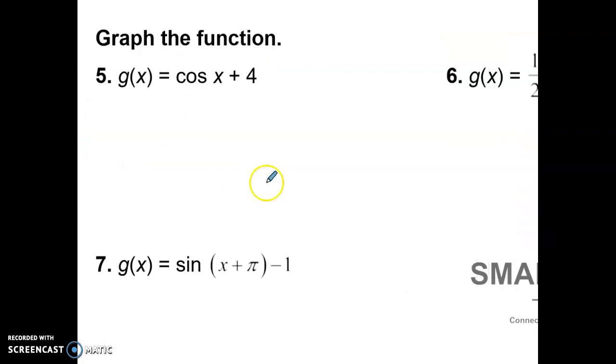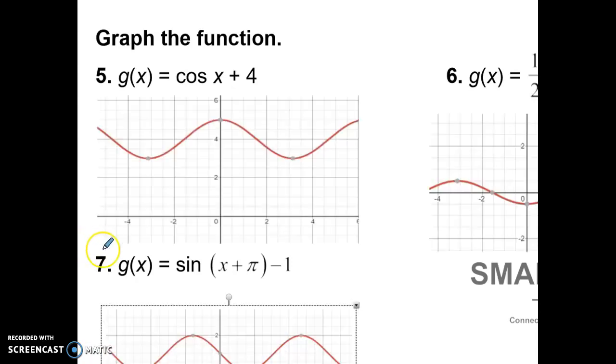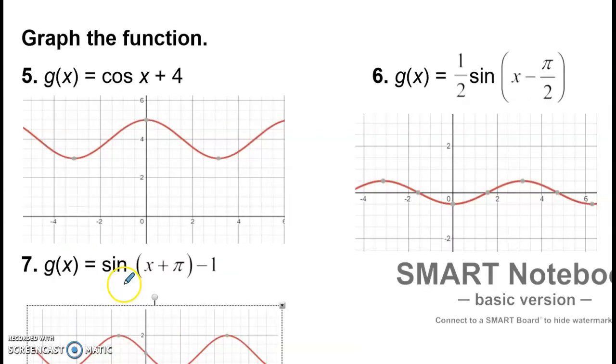Okay, so just some quick review. Let's look at these graphs right here. Cosine of x plus 4, the only thing that's being changed is being shifted up 4. So instead of cosine crossing right here, it's at 1, 2, 3, 4 units. So the cosine of x plus 4 would look like this. It's still one complete unit in 2π. So it goes one complete cycle or one complete period for 2π.